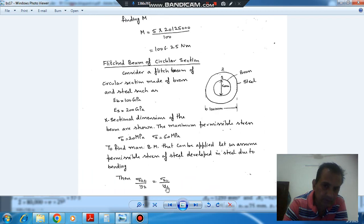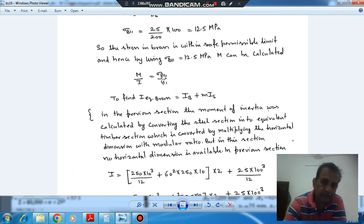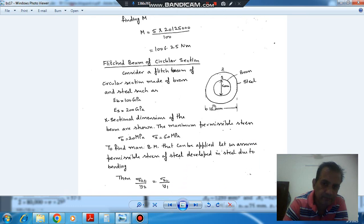And the permissible stress in the brass is 20 MPa. So we think this is the safe limit. So now we can take the maximum stress occurring in the brass at 12.5 MPa and it is at 1-1.